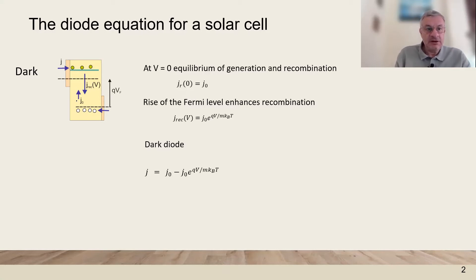We have then the thermal generation current opposed by a recombination current that increases, and this is the dark diode equation.